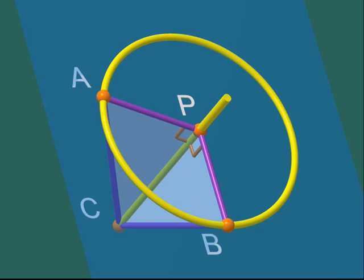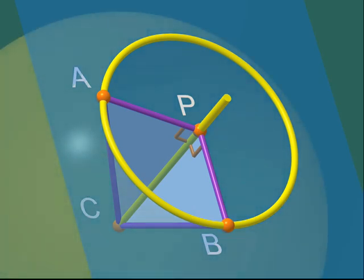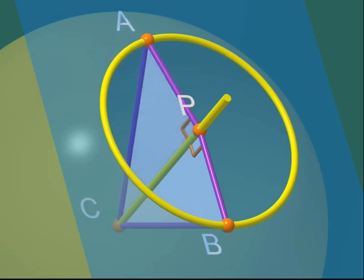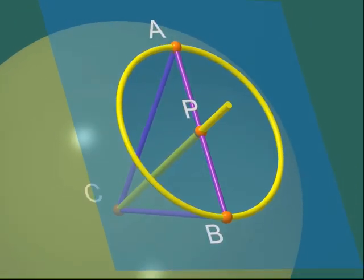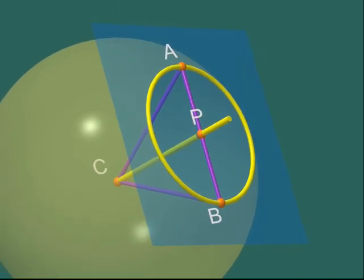Again using Pythagoras' theorem, we conclude that the hypotenuses have the same lengths. C-A equals C-B. This means that the point B also lies on the sphere, since it is at the same distance from C as A. That's it. We have proved that when a plane cuts a sphere, the cross section is a circle.